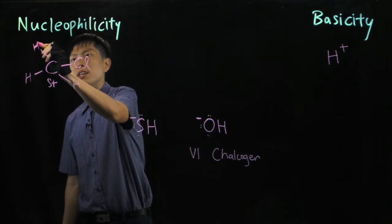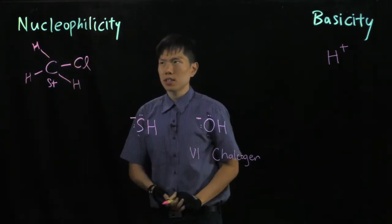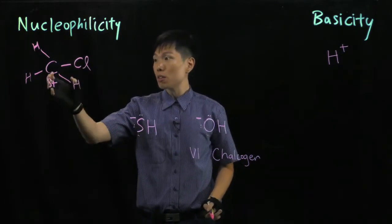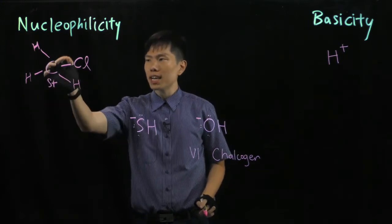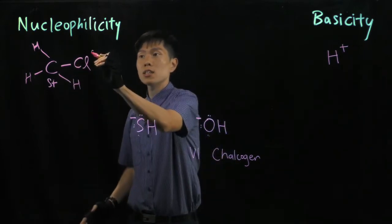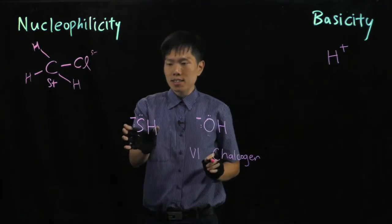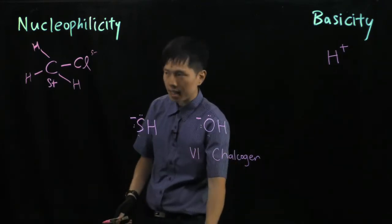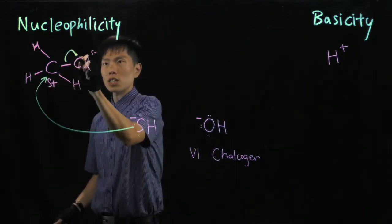Now, let's compare the nucleophilicity first of these two ions. To be a nucleophile, you need to attack an electron deficient carbon atom, or any atom, and eject another molecule, fragment, or atom. In this case, the good leaving group is a chlorine. So we expect that sulphur, using the lone pair, can attack this carbon and eject the chlorine.